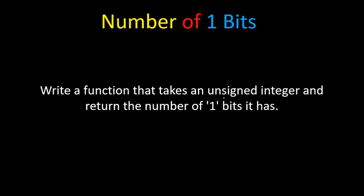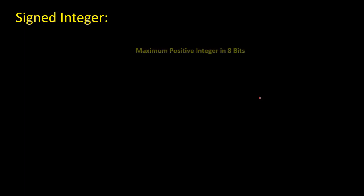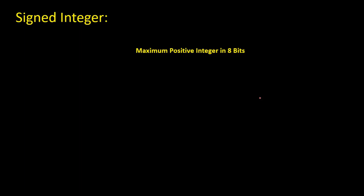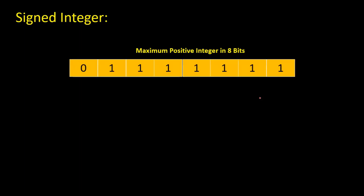Don't worry about unsigned integer — we have a detailed explanation in this video. First, let's talk about signed integers. Let's suppose we have eight bits for an integer, so it's easy to explain. If we choose 30 bits instead, it will be pretty hard to explain. Suppose you're given this binary number, which is equivalent to 127, and here we have the sign bit — this zero is the sign bit.